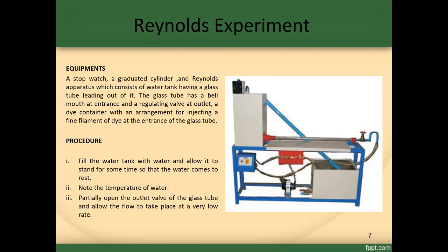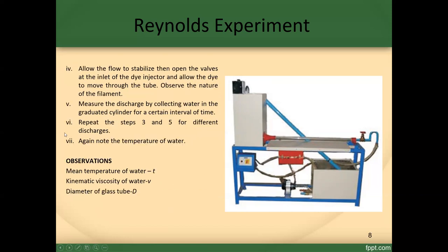Procedure: One — fill the water tank with water and allow it to stand for some time so that the water comes to rest. Two — note the temperature of the water. Three — partially open the outlet valve of the glass tube and allow the flow to take place at a very low rate. Four — allow the flow to establish, then open the valve at the inlet of the dye injector and allow the dye to move through the tube. Observe the nature of the filament. Five — measure the discharge by collecting water in the graduated cylinder for a certain interval of time.